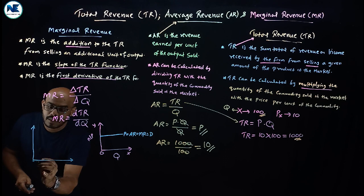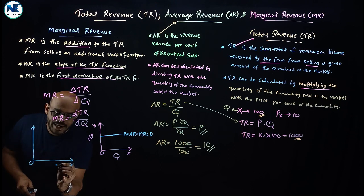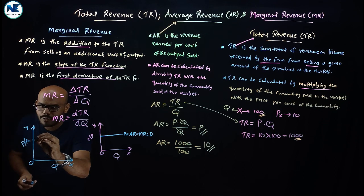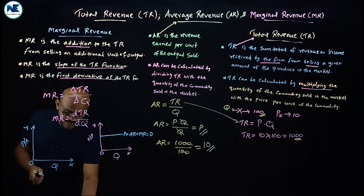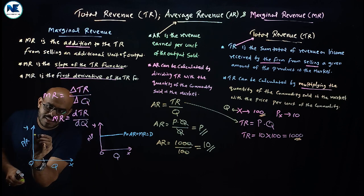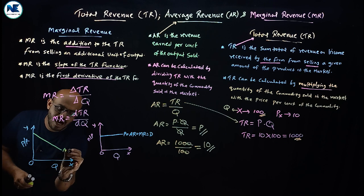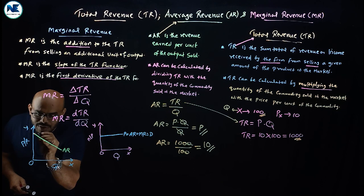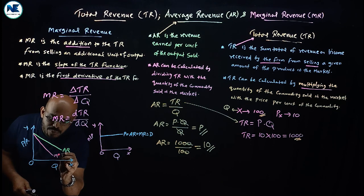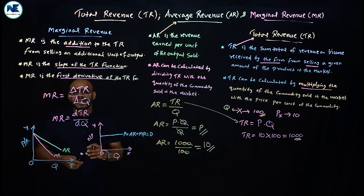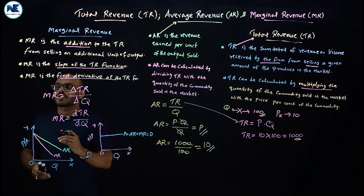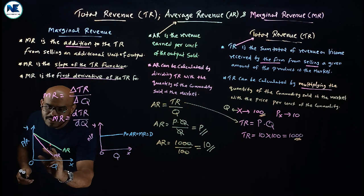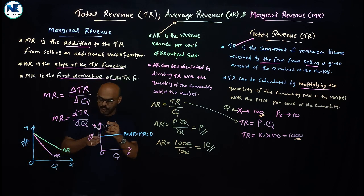Under imperfect competition — for example, monopoly or monopolistic competition — on the OX axis we see quantity of output and on the OY axis we see price or revenue. Both the average revenue and marginal revenue curves are downward sloping. Marginal revenue lies below the average revenue curve.